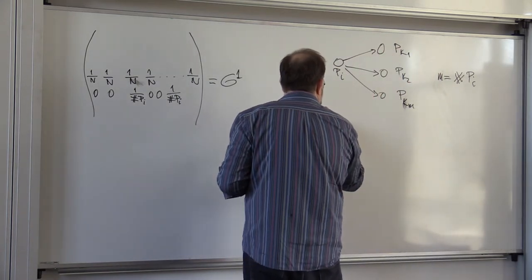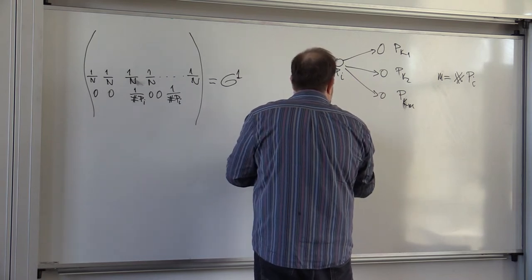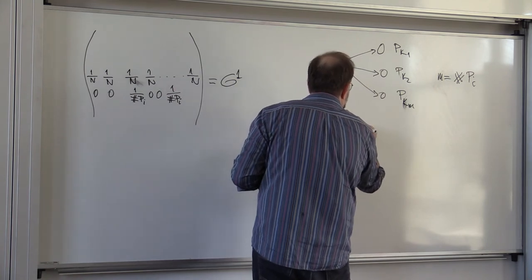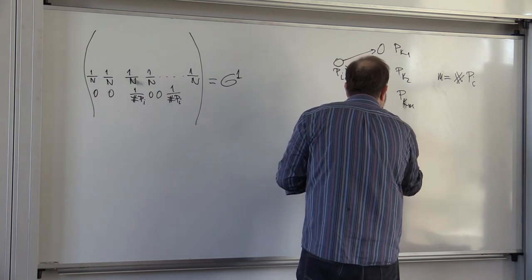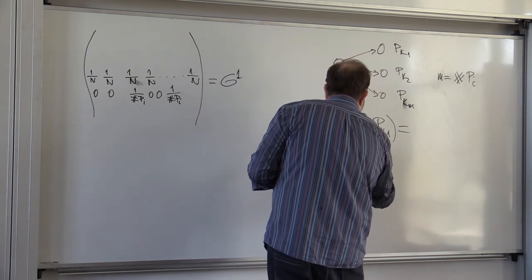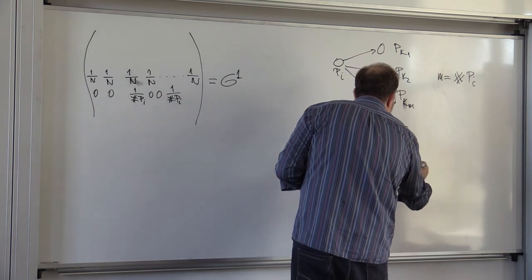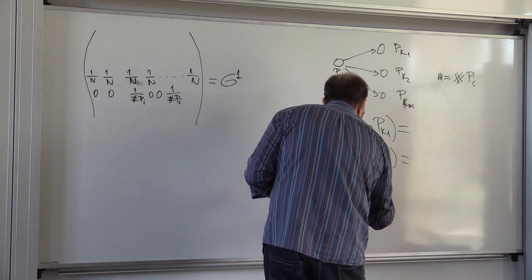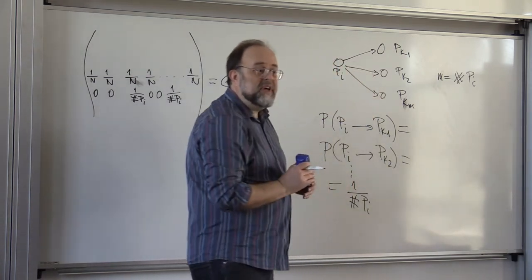The probability that you go from P_i to P_k1 is equal to the probability that you go from P_i to P_k2, and this is equal all the way to 1 over the total number of outgoing links in P_i.